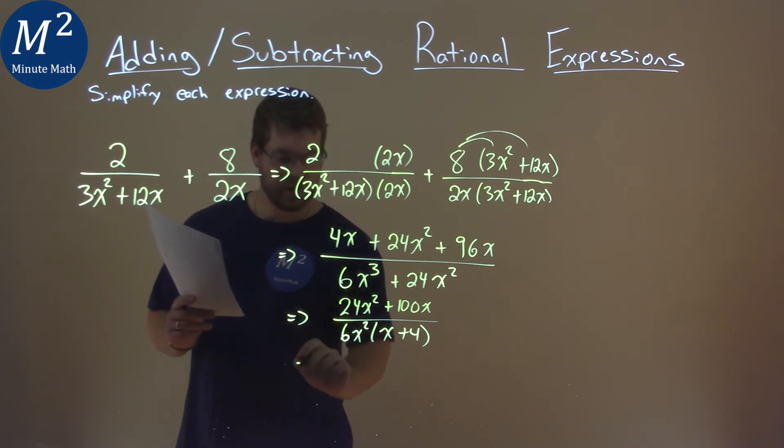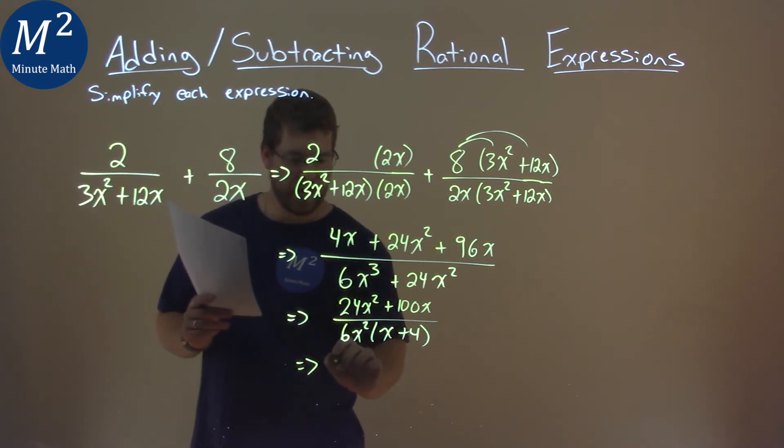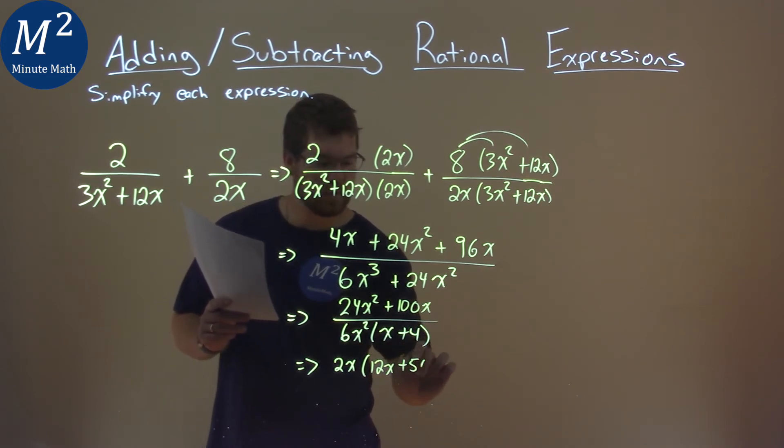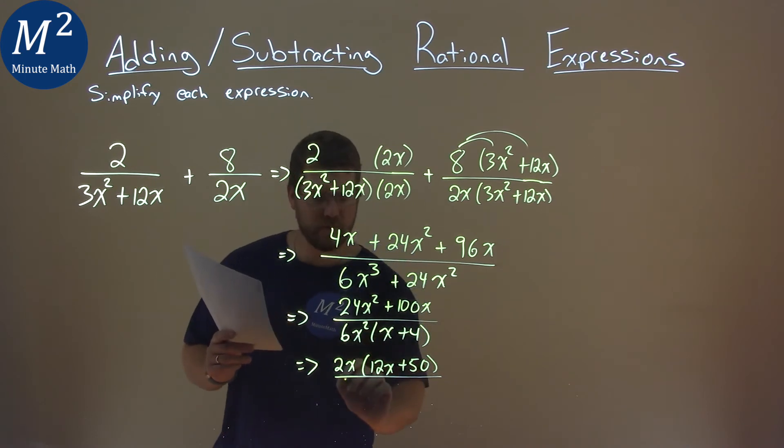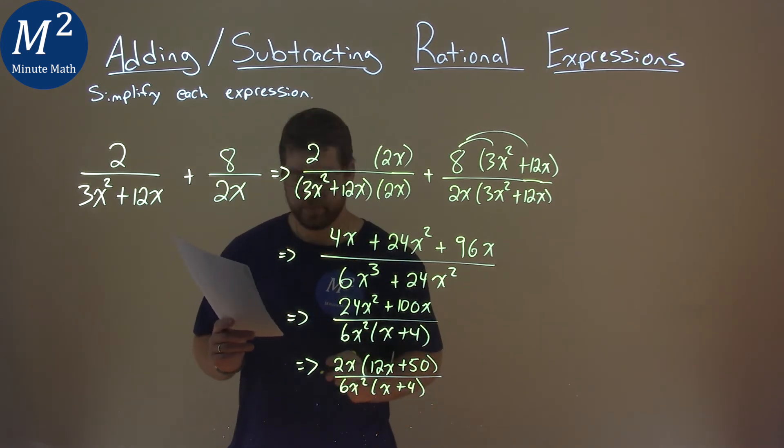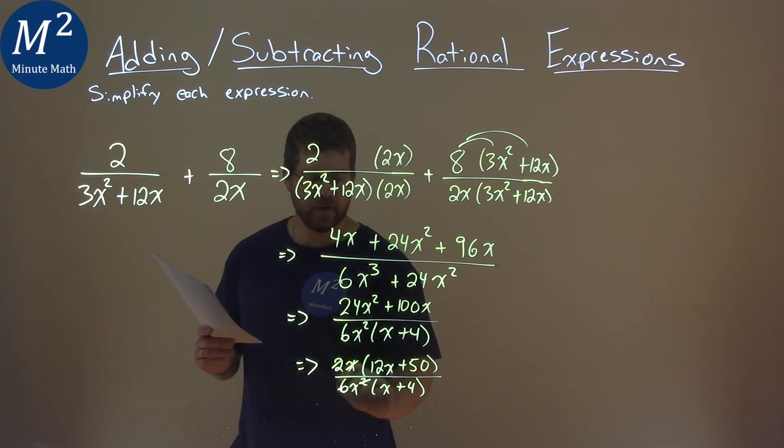If I pull out 2x, I'm left with 12x plus 50 in the numerator, and the denominator is 6x squared times x plus 4. That helps me here so I can simplify this. This x cancels with this x squared, and the 2 and the 6 become a 3.